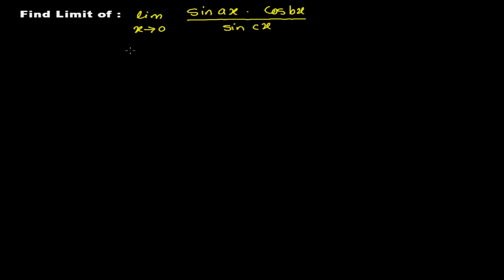In the previous video we had solved a problem where we changed our limit according to the demand of the angle of the trigonometric function. There was tan and the angle was x minus a, and we changed our limit as x minus a. So here that is why I'm giving this problem again — you need to change your limit according to the demand of your angle.